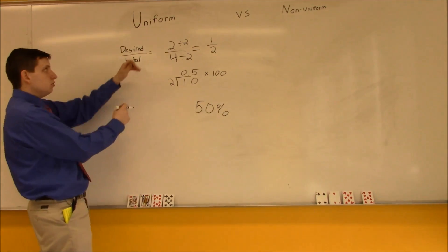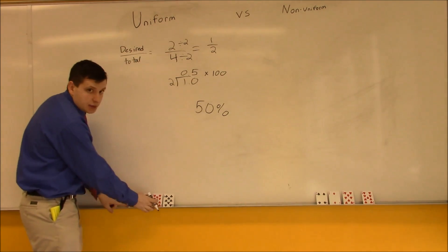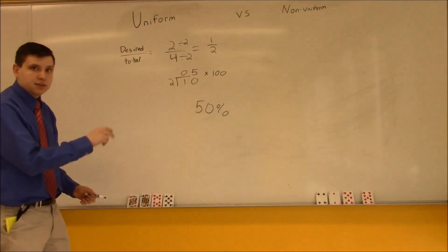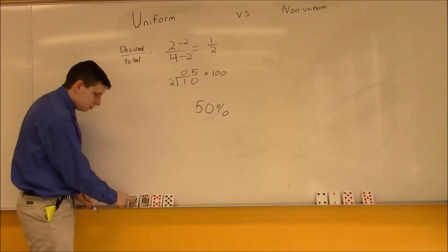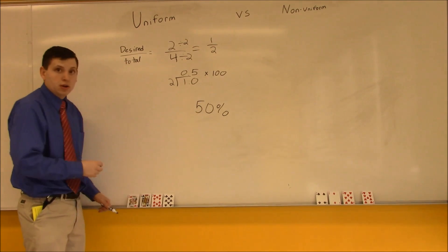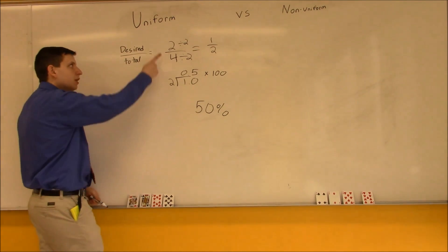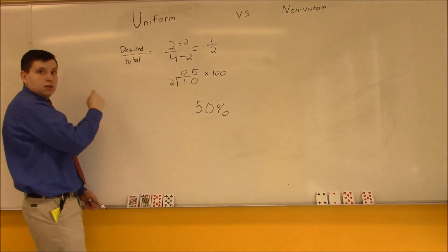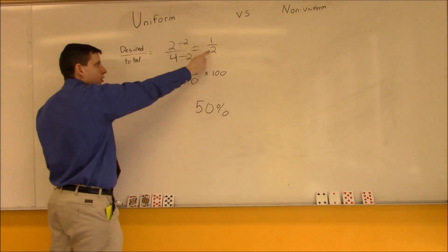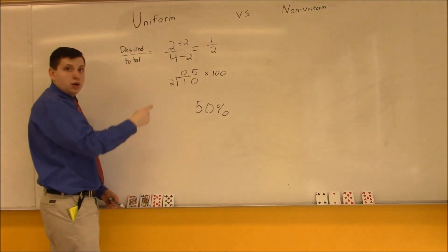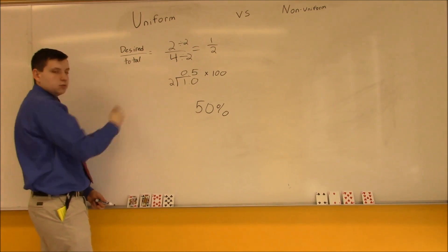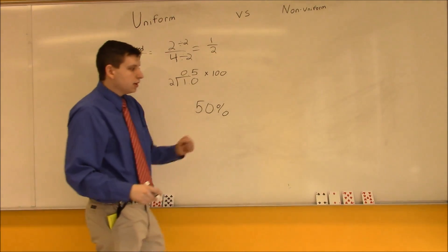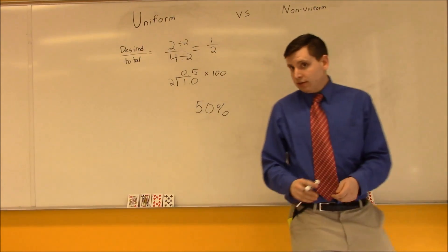This is uniform because it's a 50 percent chance of choosing a black card. It's the same thing if you choose a red card, because there are the same number of possibilities — two — so it's the same fraction: two over four, simplifying to one over two, also being 0.5.